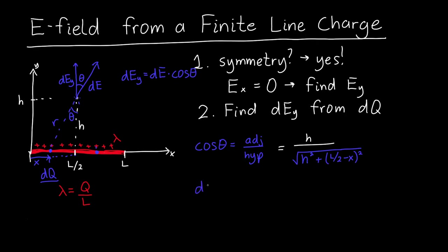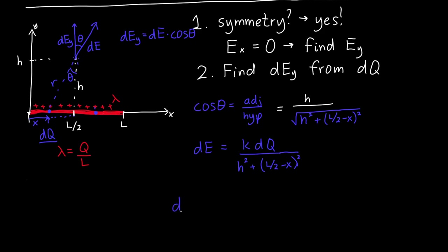Now all we need to figure out is DE. But we know what the electric field from a point charge is. That's just K times Q, which here would just be DQ, divided by R squared, or H squared plus L over 2 minus X squared. And the reason we can use the equation for a point charge is that this is exactly a point charge. It's a differential element, a tiny little piece of charge. So it's absolutely fantastic to call that a point charge.